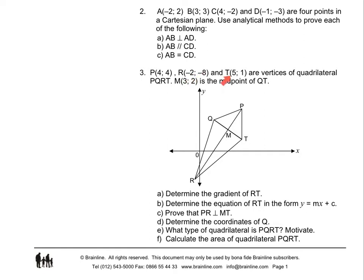We are also given M, the coordinate of the midpoint of QT. For question A, we have to determine the gradient of RT. We must also determine the equation of RT in the form y equals mx plus c. Then we have to prove that PR is perpendicular to MT, determine the coordinates of Q, and question E: what type of quadrilateral is PQRT? We have to motivate the answer, and question F: calculate the area of the quadrilateral.